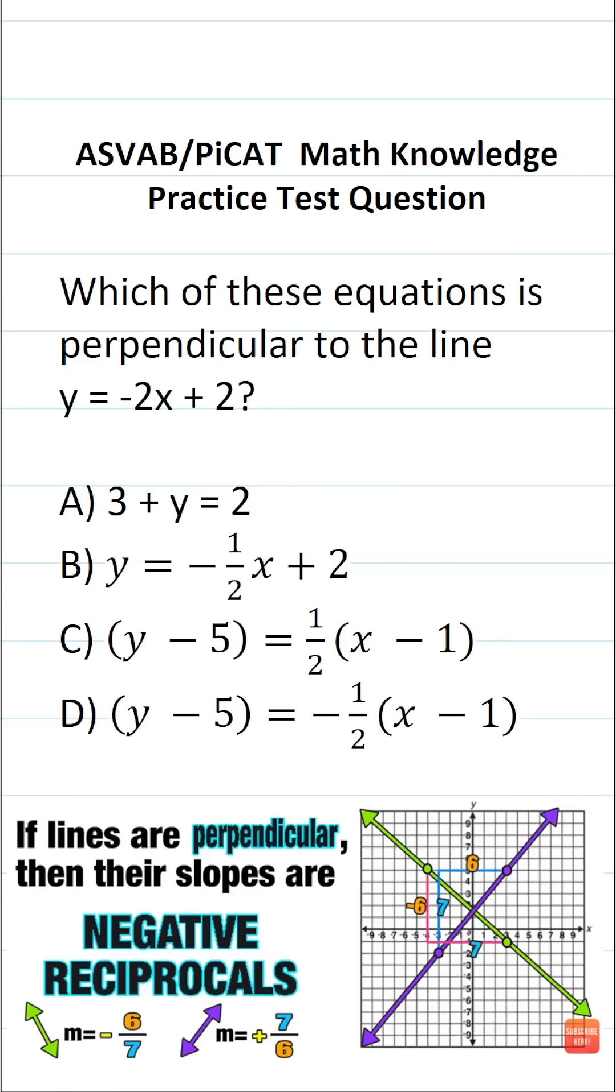This math knowledge practice test question for the ASVAB and PiCAT says, which of these equations is perpendicular to the line y equals negative 2x plus 2?